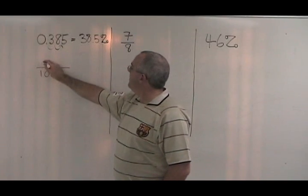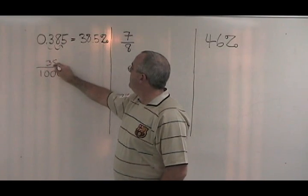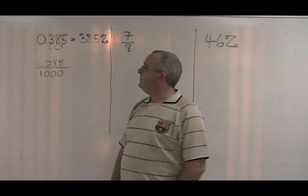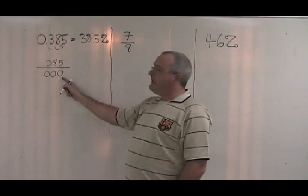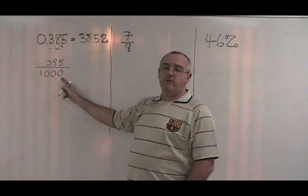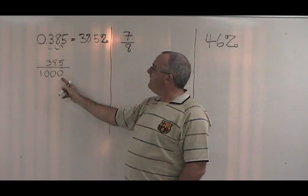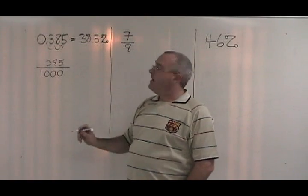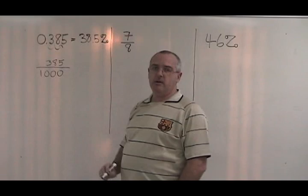On top, we put the number 385. This is now a fraction, but we should reduce it. We look for a common factor between the top and the bottom, and I can see that these are going to have a common factor of 5.